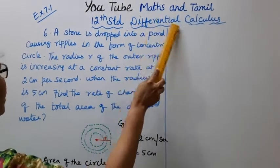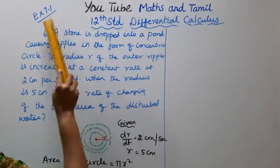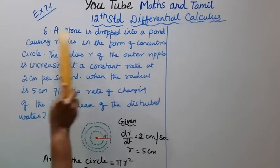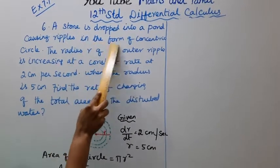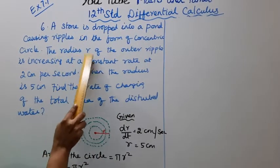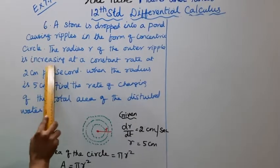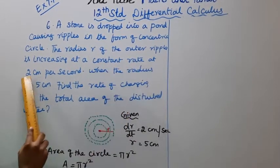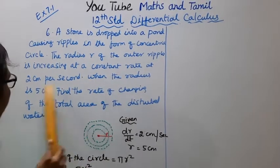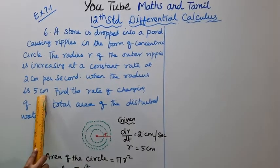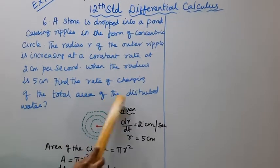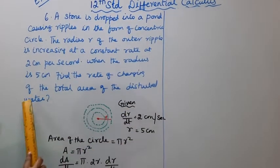Differential Calculus Exercise 7.161: A stone is dropped into a pond causing ripples in the form of concentric circles. The radius R of the outer ripple is increasing at a constant rate of 2 cm per second. When the radius is 5 cm, find the rate of change of the total area of the disturbed water.